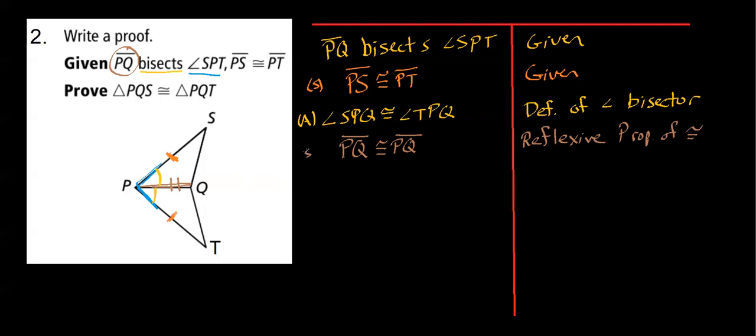And that's a pair of sides. So I have a pair of congruent sides, a pair of congruent angles, a pair of congruent sides. And notice that my angle is the included angle. This angle is right in between my two marked sides in triangle PQS. And my angle QPT is between my two marked sides in triangle PQT.